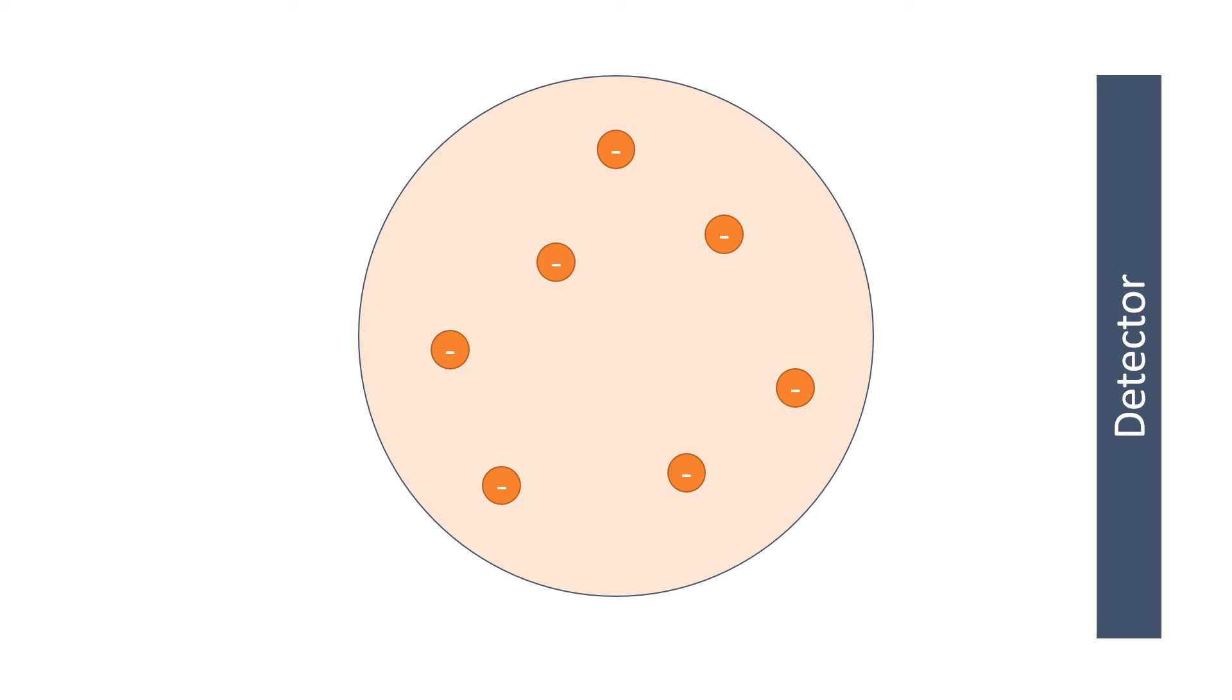Rutherford, Geiger and Marsden were three scientists who decided to fire alpha particles at a thin gold sheet. They expected all of the alpha particles to pass through and be detected on the other side, but some deflected away and did not end up where they were expected.